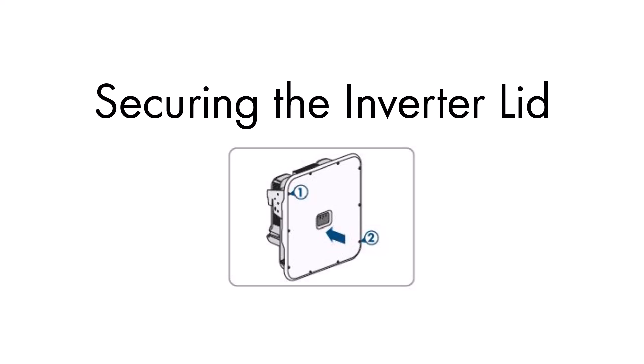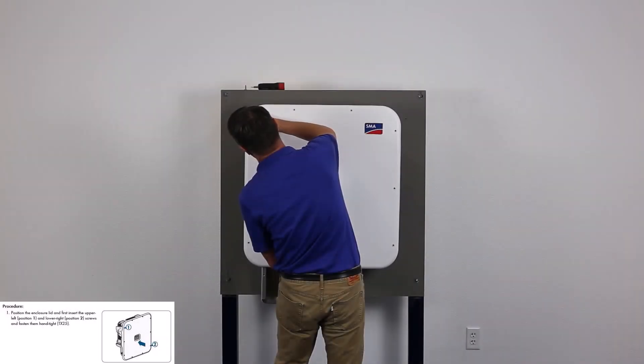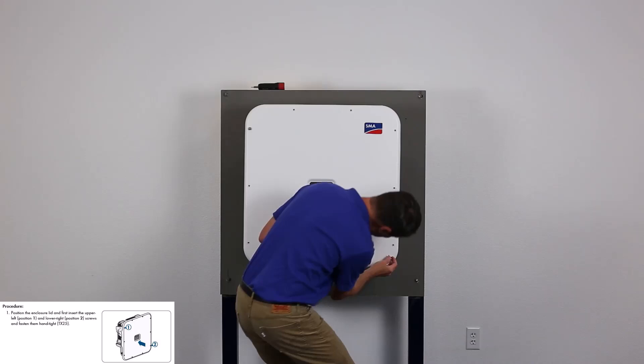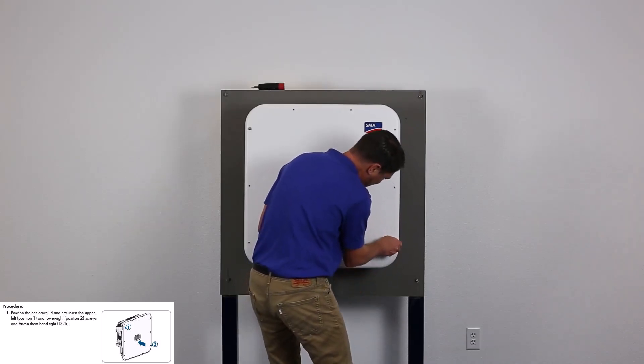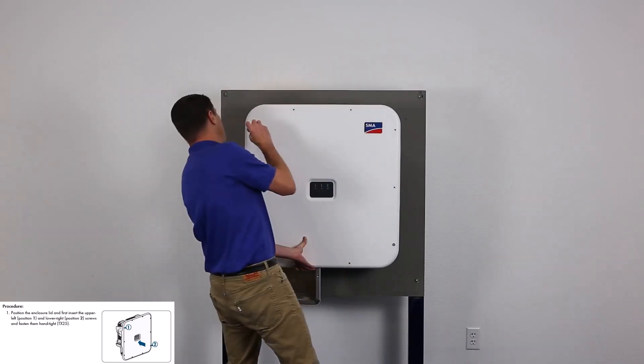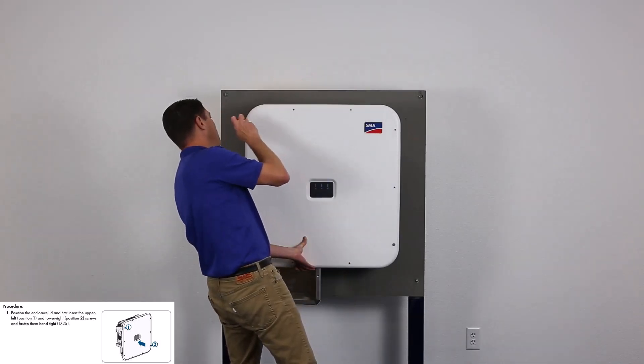To secure the lid, first insert the upper left and lower right screws and tighten them securely by hand. To ensure proper fastening, use a torque specification of 53-inch pounds to secure the lid screws.